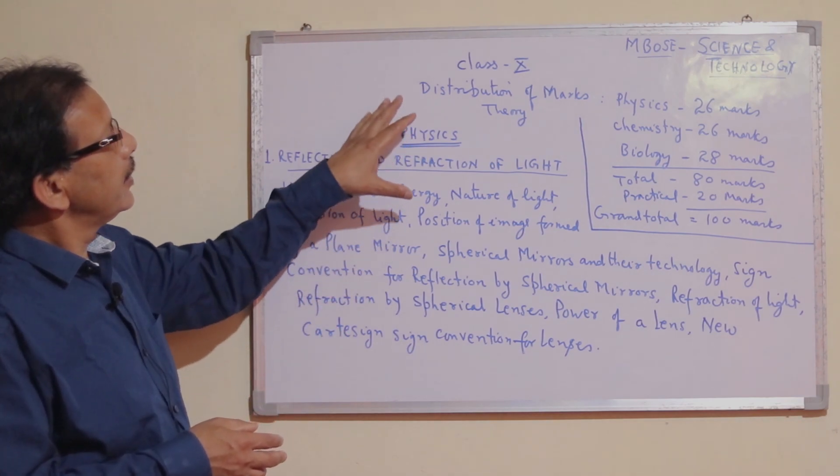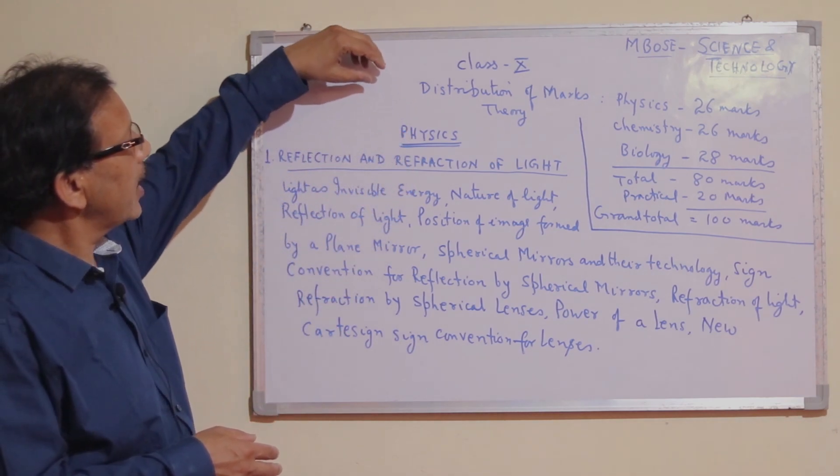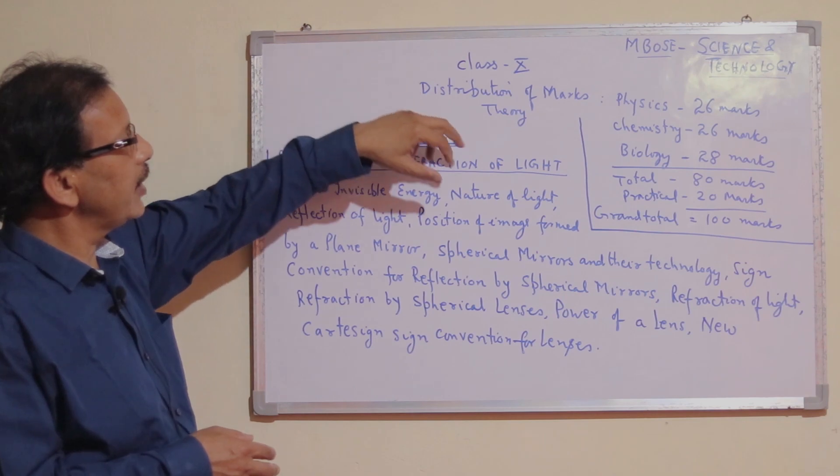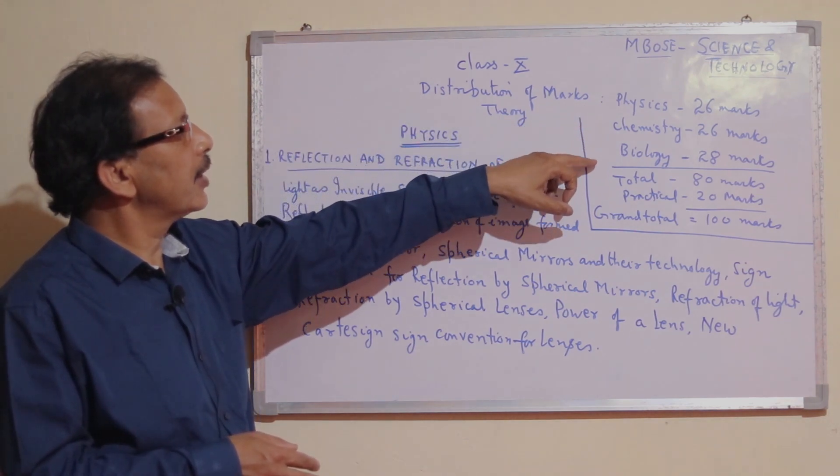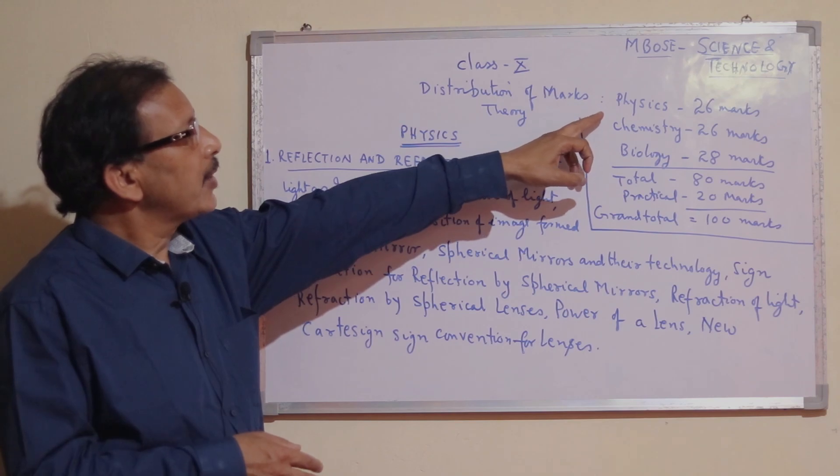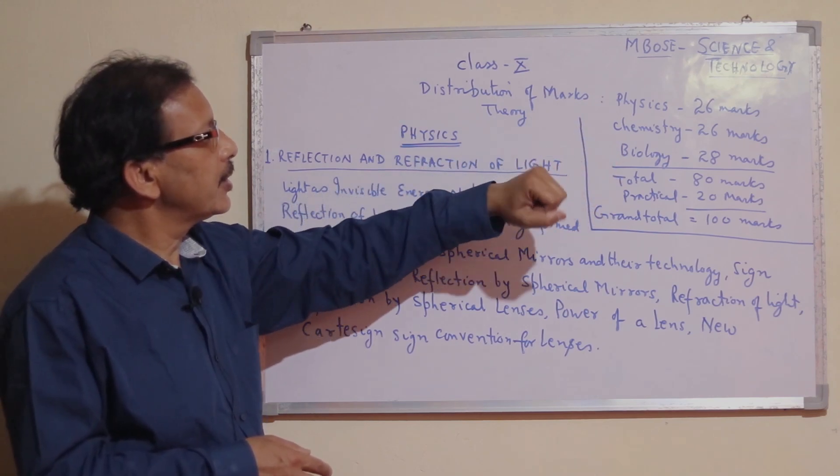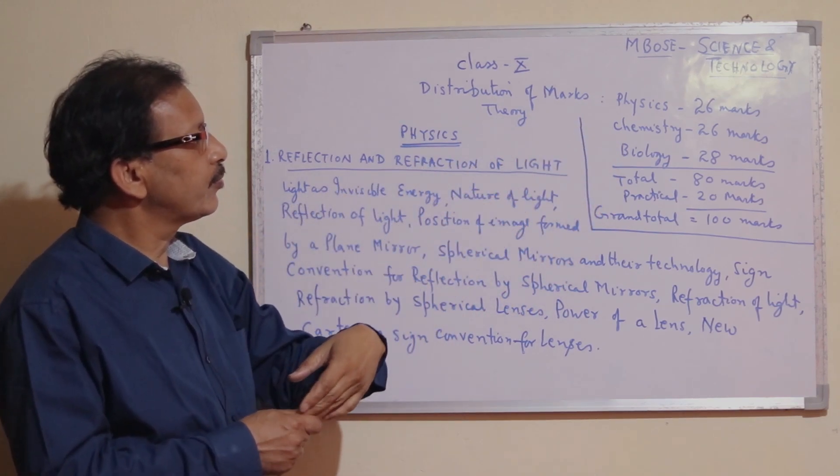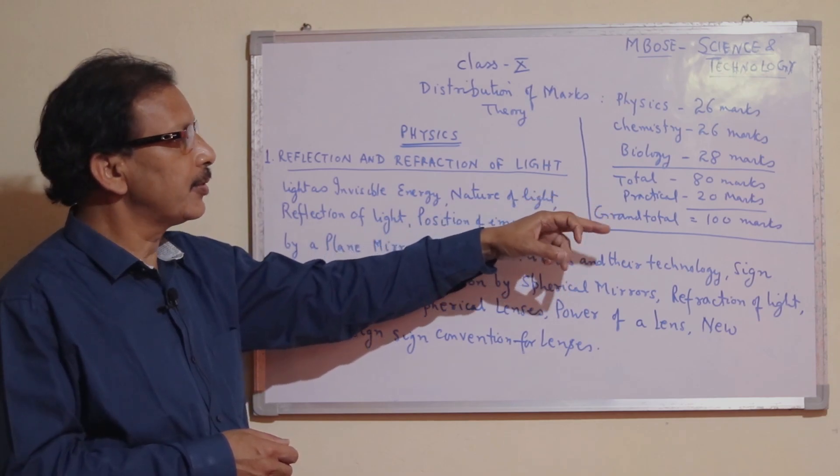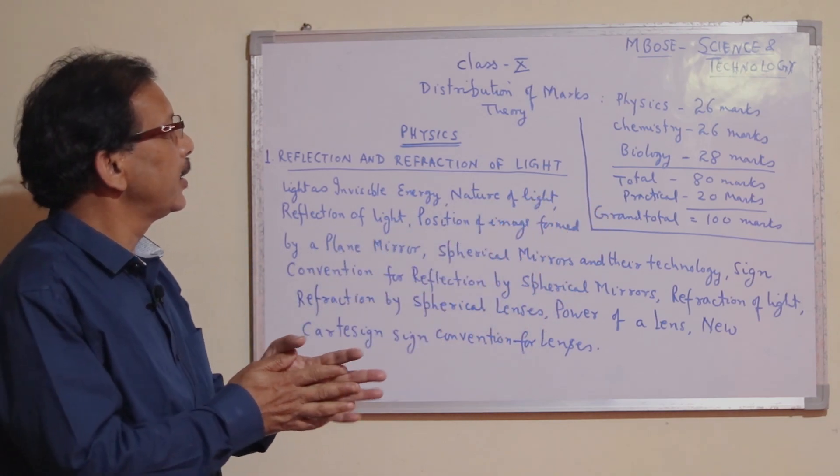In Science and Technology, we have three divisions: Physics, Chemistry, and Biology. Physics will be 26 marks, Chemistry 26 marks, and Biology 28 marks. Total 80 marks and Practical will be 20 marks, so grand total 100 marks.